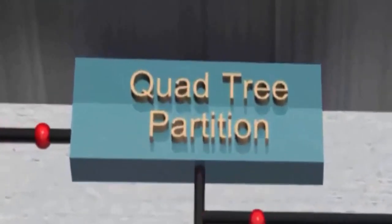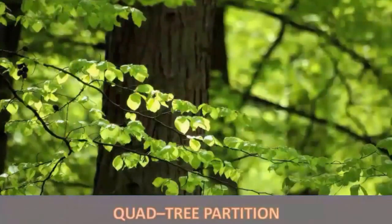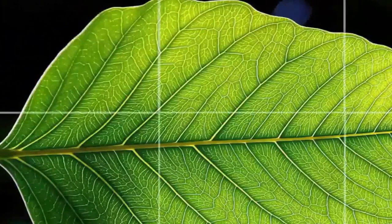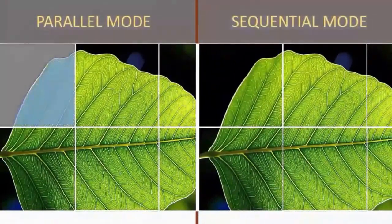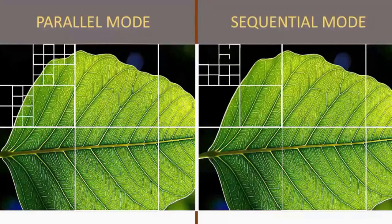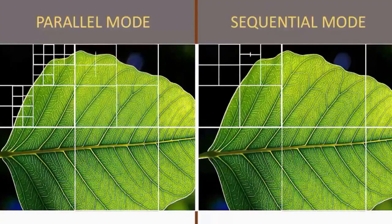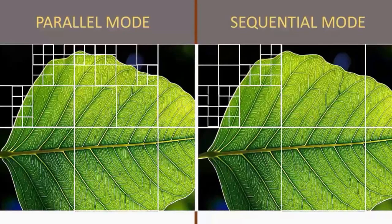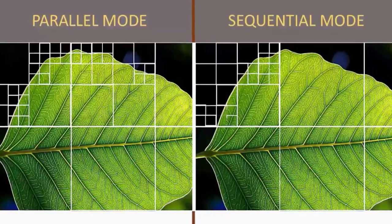The first module is the quad-tree partition module. When encoding, the video needs to be divided into different sizes of blocks. This module is responsible for finding the block structure that results in the most efficient encoding. In software, each mode is evaluated one after the other. However, in RTL, since we can perform many operations in parallel, we can find the optimum partition structure in fewer clock cycles, vastly reducing the encoding time needed.